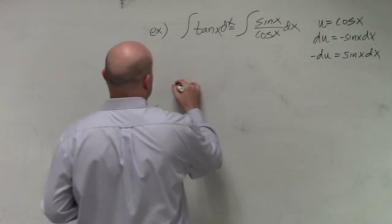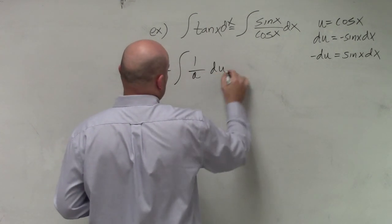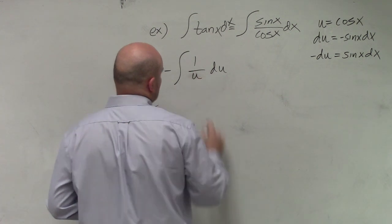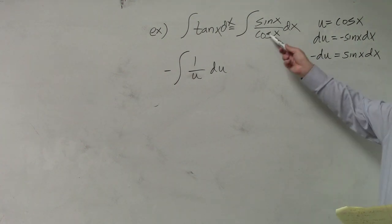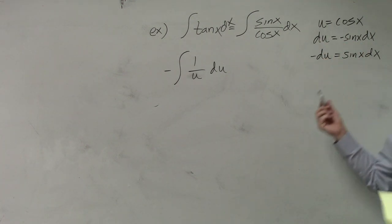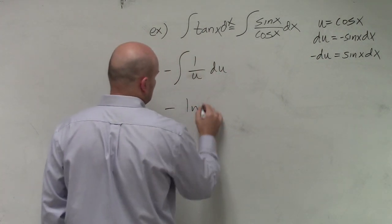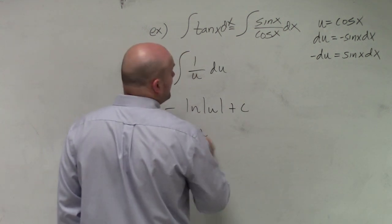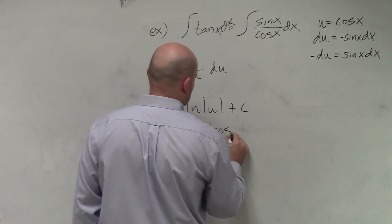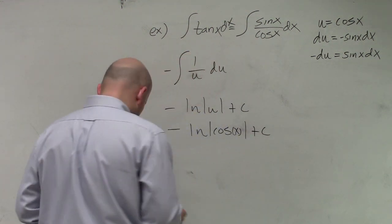So now I can rewrite this as negative 1 over u du. So I can go ahead and integrate this now. And then my cosine of x plus c.